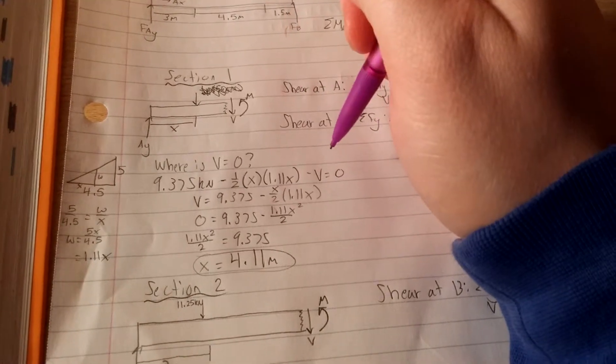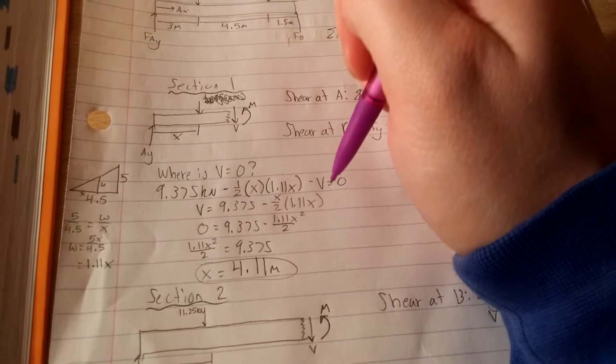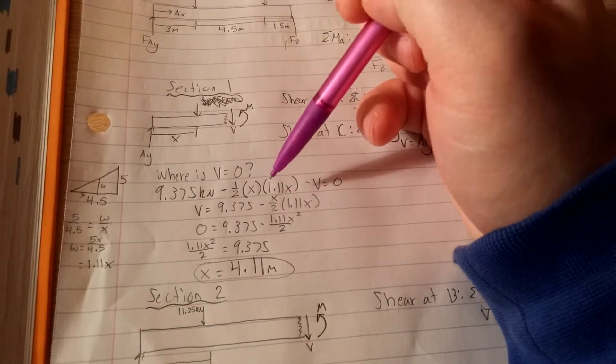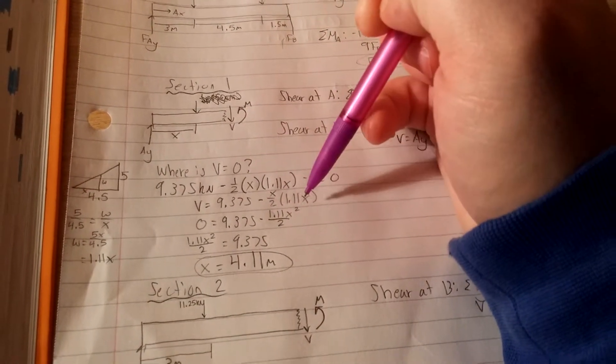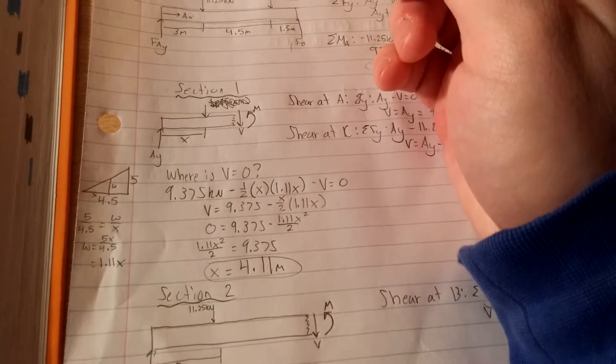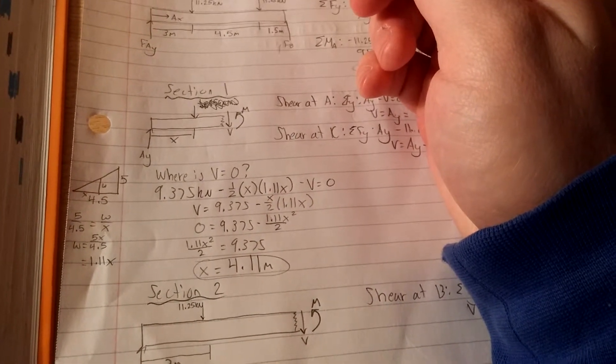That points down, and then we have the shear pointing down. Once we solve for the shear, we get 9.375 minus all of this. And I simplified it, and we end up getting that it's zero at 4.11 meters.